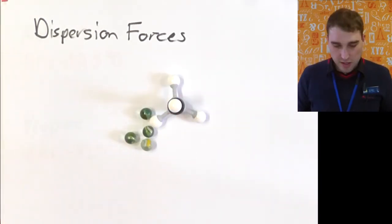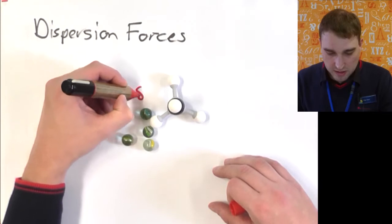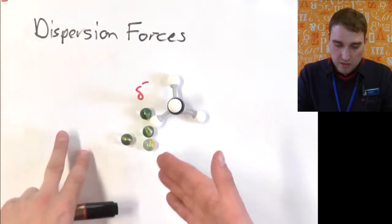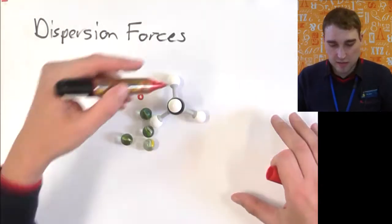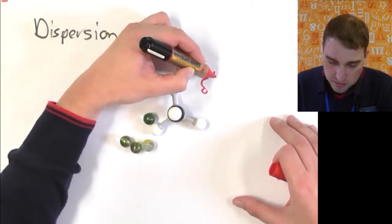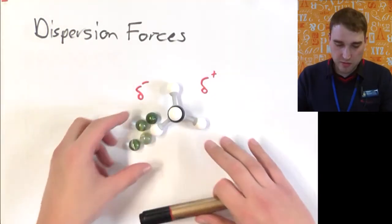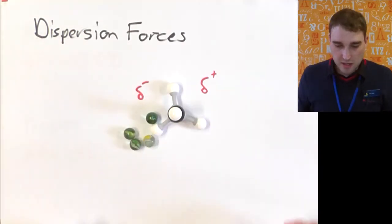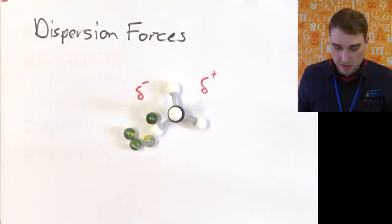That gives this side a slight negative charge, so we represent that using the delta-negative notation. If the electrons are pulling down this side, that gives the other side of the molecule a slight positive charge. So my electrons are over here — that's got a negative charge on this side and a slight positive charge on this side.